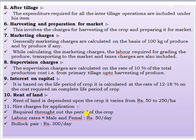Fifth is after tillage: the expenditure required for all inter-tillage operations is included under this item. Sixth is harvesting and preparation for market, which involves charges for harvesting the crop and preparing it for market.